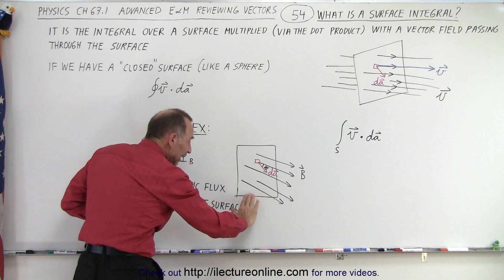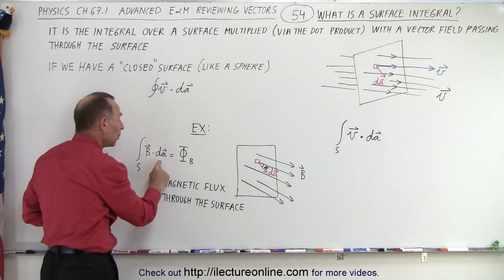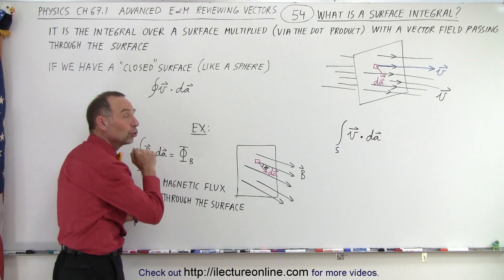And when we multiply that and we integrate, meaning sum them all up, we end up with what we call the magnetic flux through the surface.